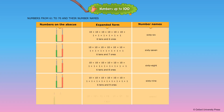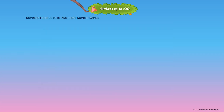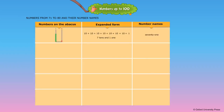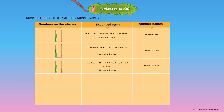7 tens — Numbers from 71 to 80 and their number names. 7 tens and 1 one — the number name is written as 71. 7 tens and 2 ones — the number name is written as 72. 7 tens and 3 ones — the number name is written as 73. 7 tens and 4 ones — the number name is written as 74.